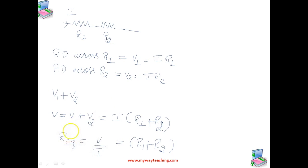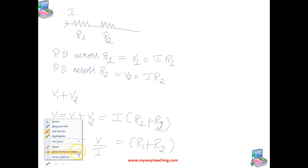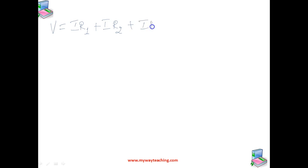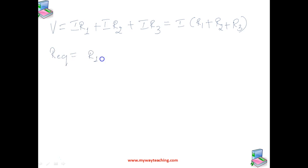If we have three resistors connected in series, then we can write the total potential across the combination as V = IR1 + IR2 + IR3, which equals I times (R1 + R2 + R3). This formula can be extended to a series combination of any number N of resistors, so the equivalent resistance equals R1 + R2 + ... + Rn.